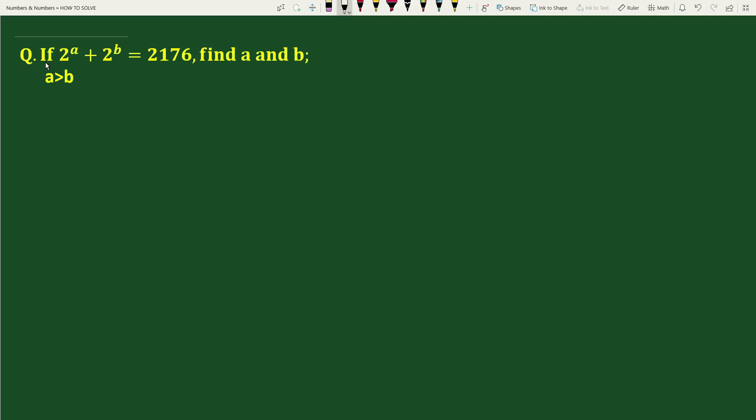Hello everyone, question is if 2 to the power a plus 2 to the power b equals to 2176, find a and b where a greater than b.